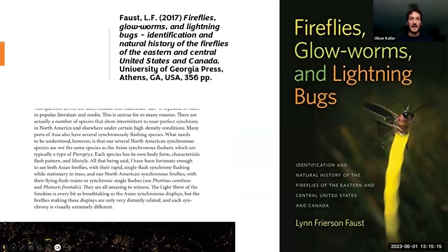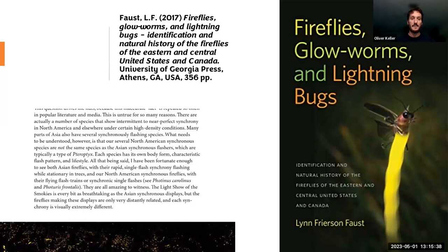Another resource is the field guide for the Eastern US — sadly it doesn't cover the Western US — by Lynn Friars and Faust. 'Fireflies, Glowworms and Lightning Bugs,' 356 pages full of amazing information. It's a great book if you want help identifying things to the species or genus level. She has covered almost every species in the Eastern US.